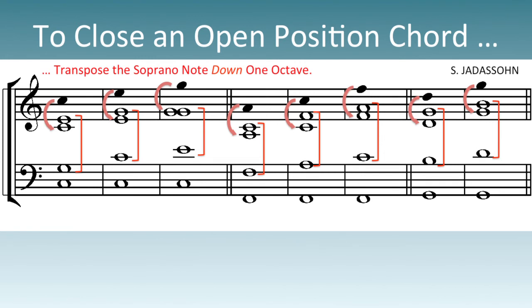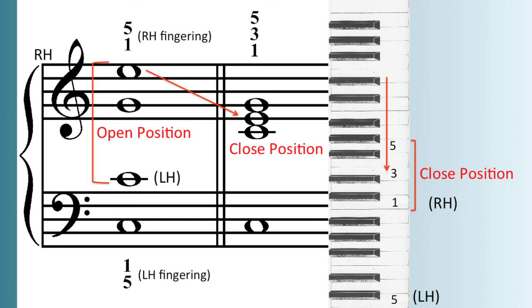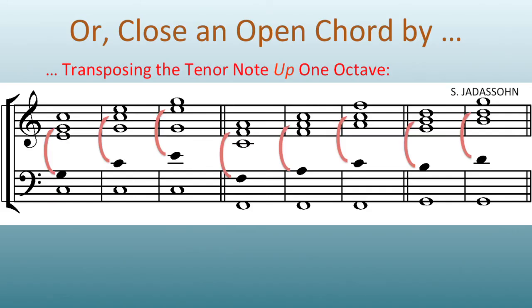To close an open position chord, either transpose the soprano note down an octave, inserting it between the alto and tenor — thus that tone becomes an alto. Or, transpose the tenor note up an octave, lodging it between the soprano and alto, making that pitch the alto of the close voicing.